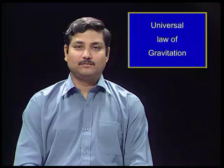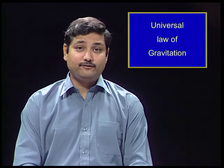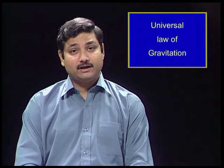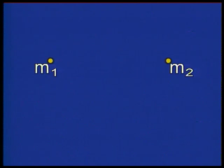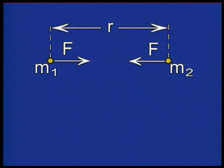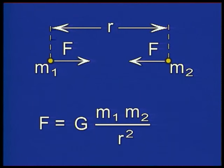This means that if two bodies of mass m1 and m2 are placed at a distance r, then the gravitational force between them is given by G m1 m2 divided by r square.